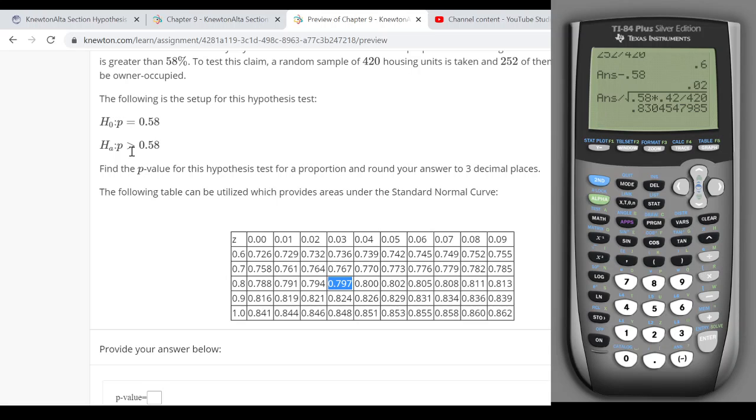Now this is the area to the left of 0.83. I want the area to the right, you know, it's a right-tailed test. So I just take 1 minus this. So the area to the right of my test statistic would be 0.203.